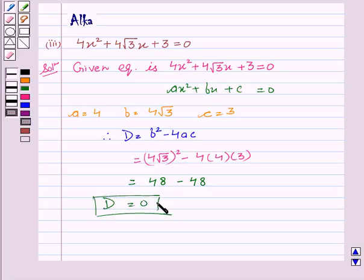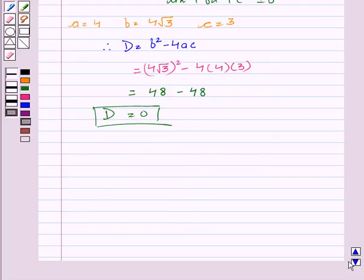Now the roots are α = (-b + √D)/2a and β = (-b - √D)/2a.